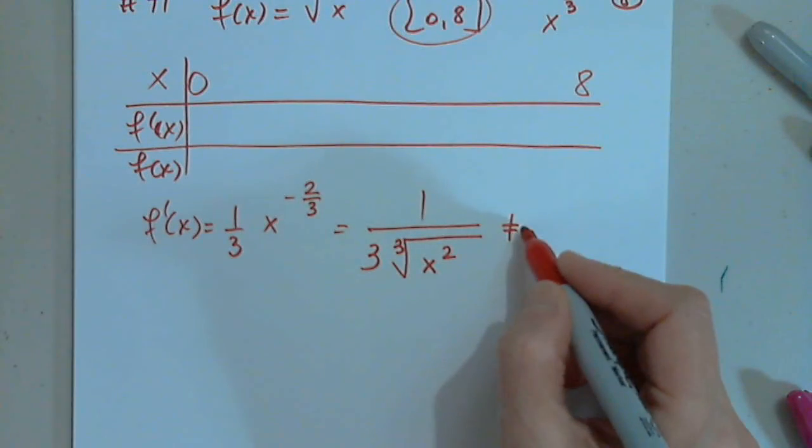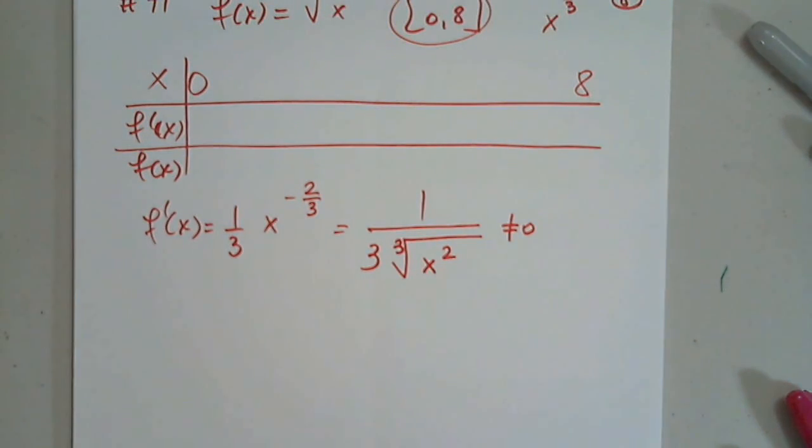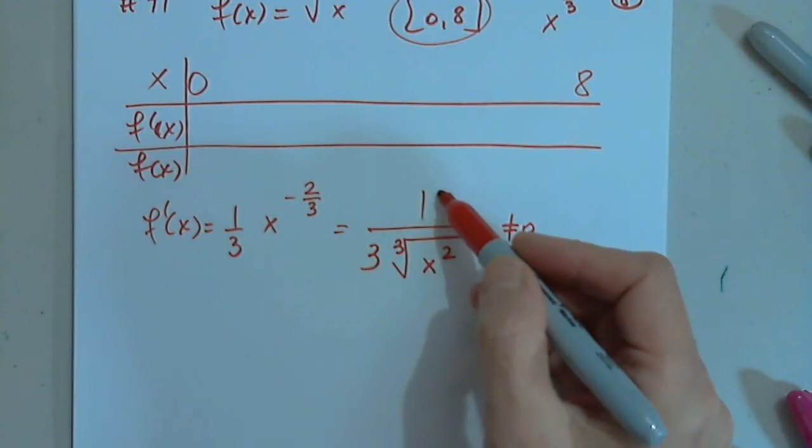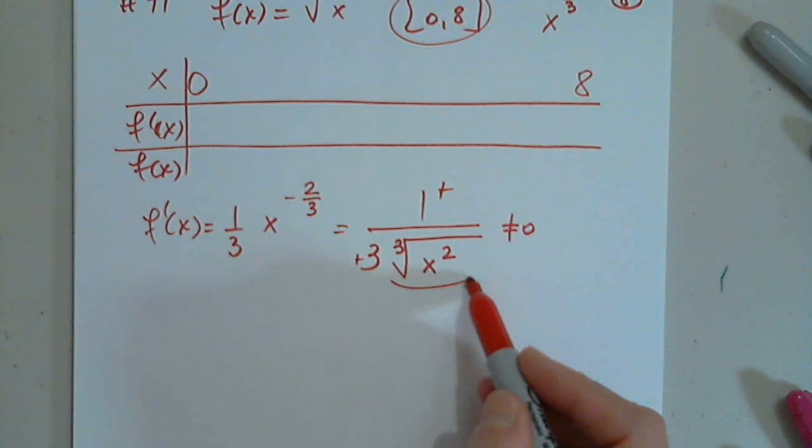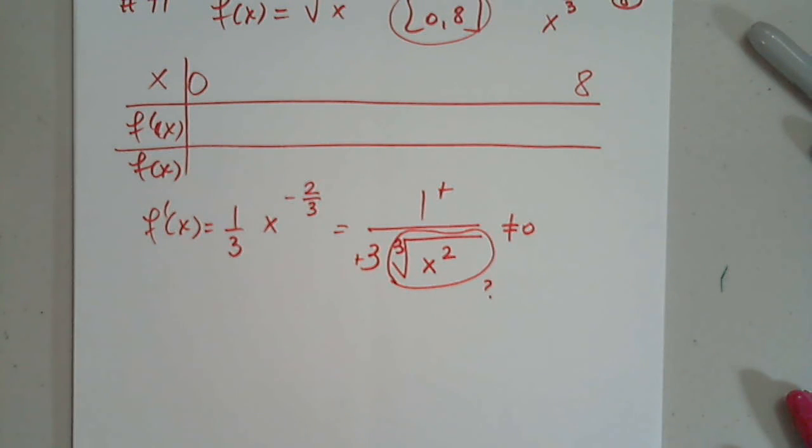It's never 0 because a fraction is 0 only when the top is 0, but the top is 1, so it can never be 0. But what about the sign of this expression? This is positive, this is positive. What about the sign of this? That's always going to be positive. Very good.